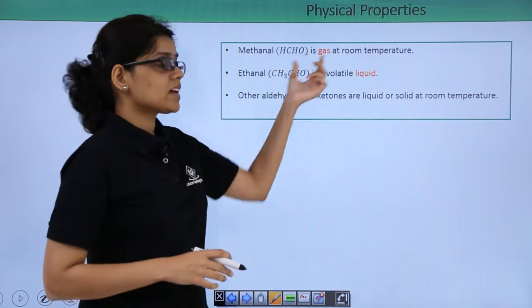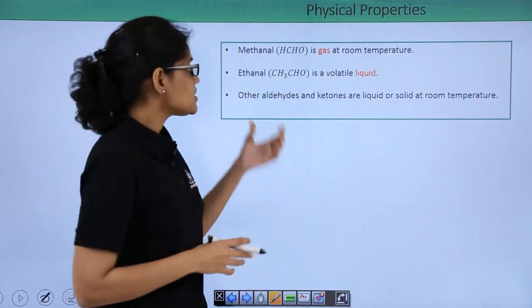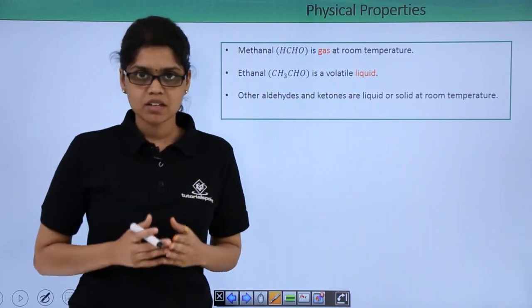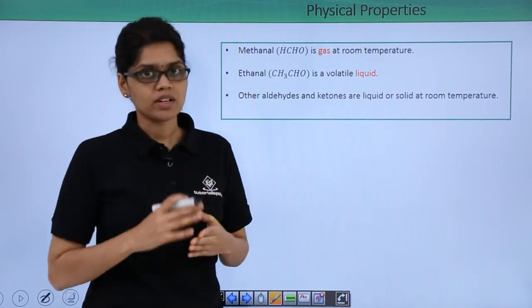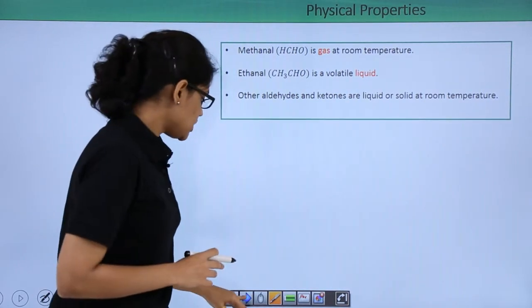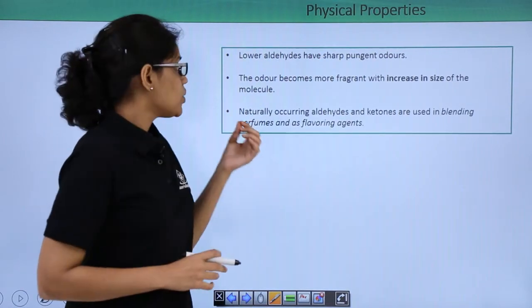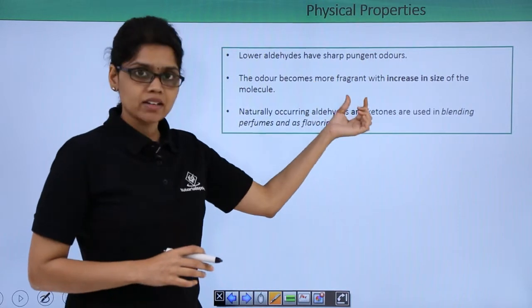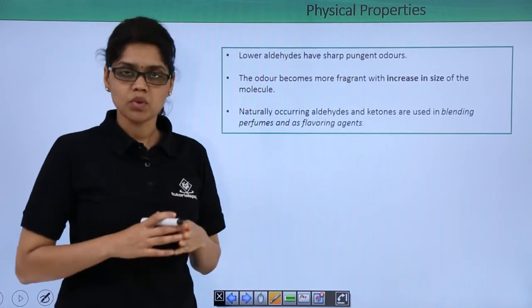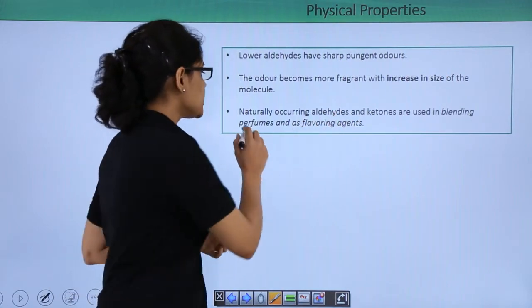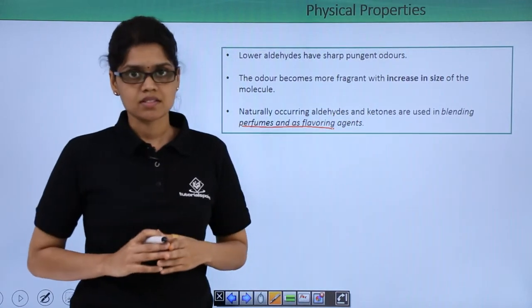You can see that methanol is a gas at room temperature whereas ethanol is a volatile liquid. Now all other aldehydes and ketones are either liquids or solids at room temperature. You can also note that lower aldehydes have a sharp pungent odour whereas the odour becomes more fragrant with increase in the size of the molecule. Naturally occurring aldehydes and ketones are used in blending perfumes and as flavouring agents.